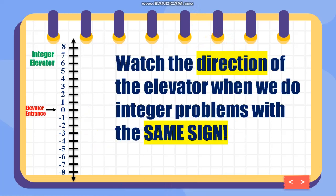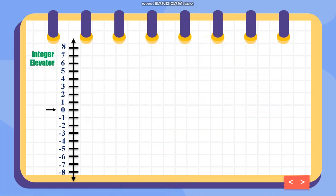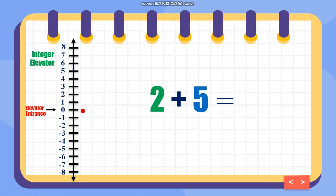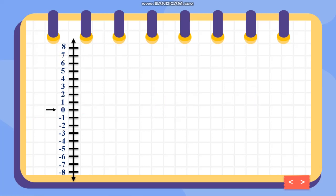Watch the direction of the elevator when we do integer problems with the same sign. For example, I have 2 plus 5 — both are positive. Starting from 0, going up positive 2, then going up positive 5, I end up here. The answer is positive 7.